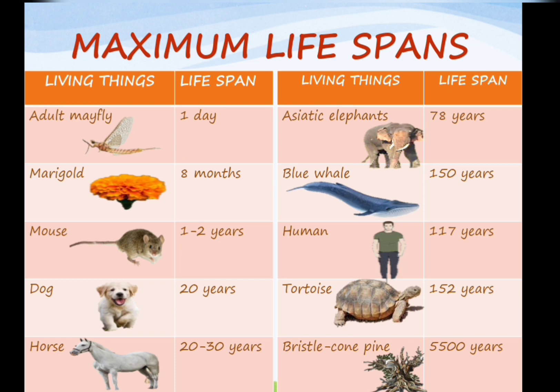A human being can have a maximum life of 117 years. A tortoise can live for a maximum of 152 years, while a bristlecone pine can live for an extraordinary 5,500 years.